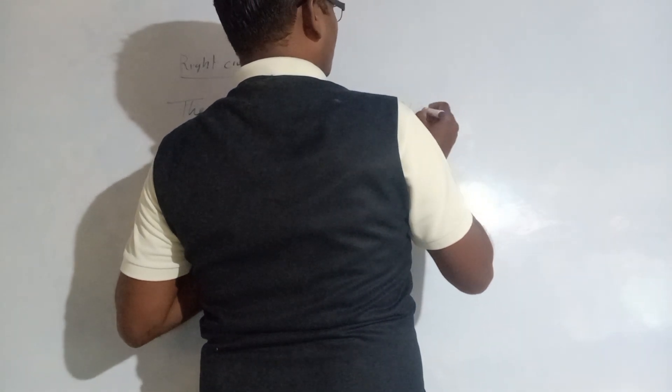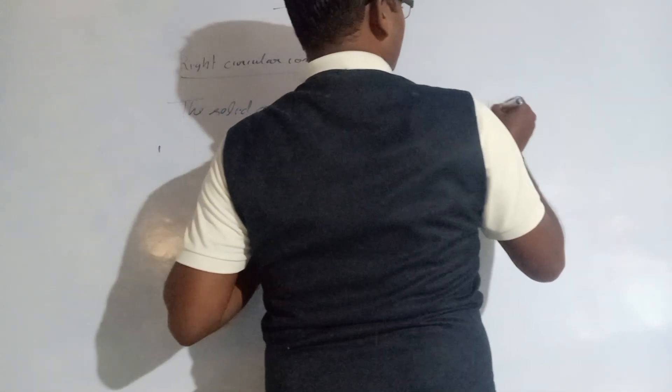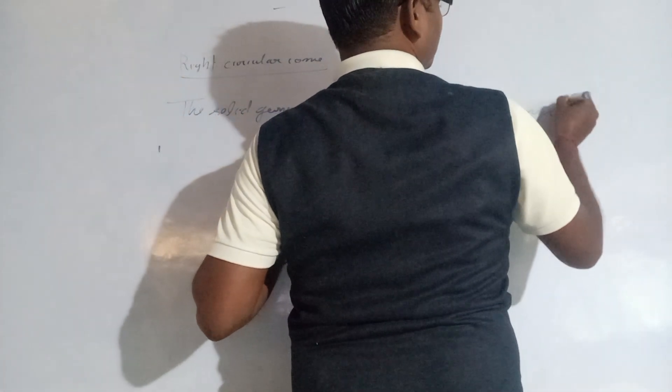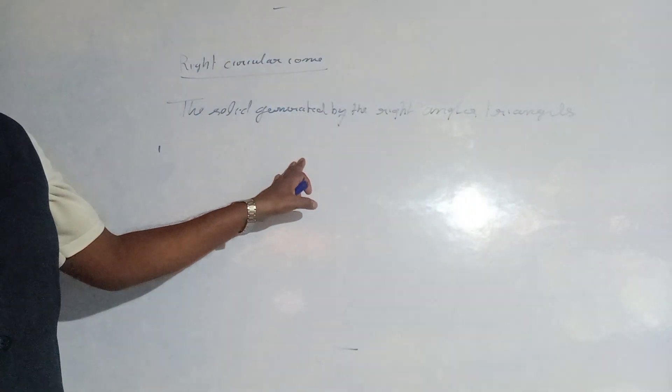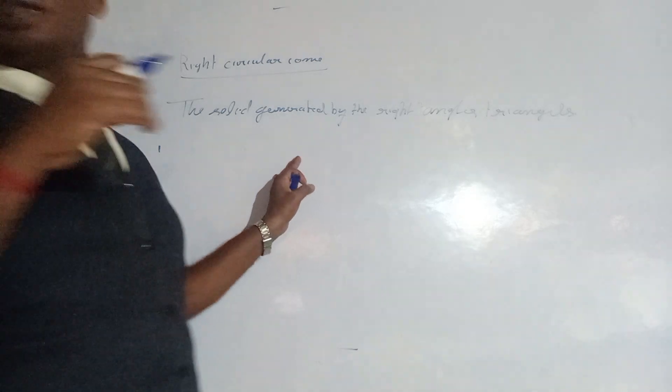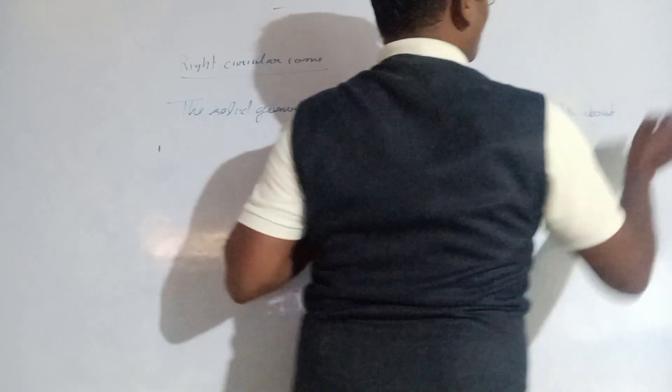A right angle triangle, which is generated by rotating the right angle triangle about one of its sides.